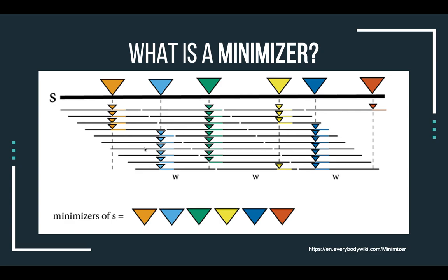As you can see in this example, we have a sequence S. We first break it into smaller windows W. For each window we pick all the k-mers.